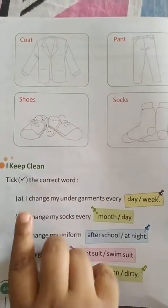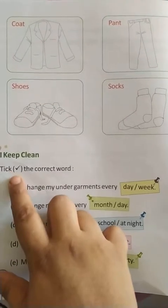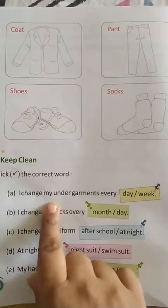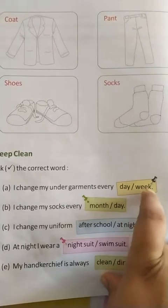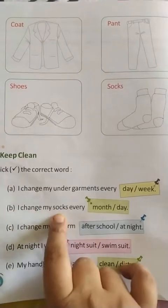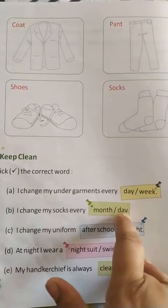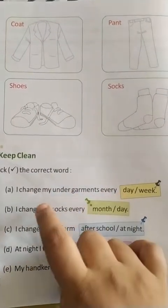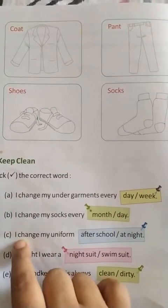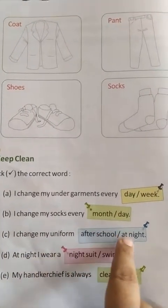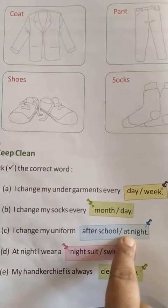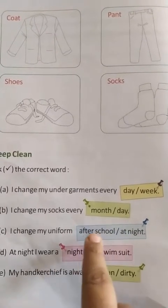Now, I keep clean. Tick the correct word. Number one, A: I change my undergarments every day or week — it's every day. B: I change my socks every month or day — day. C: We change our uniform after school or at night. When you come from school, what do you do? You change it. When? At afternoon — after school.